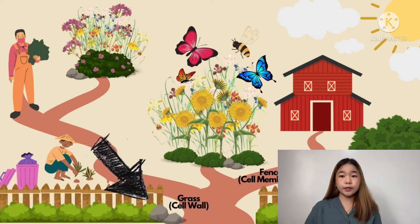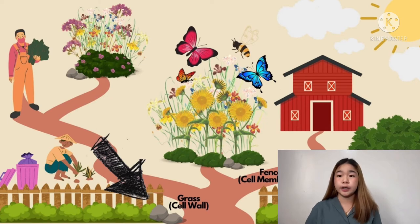Second, we have the grass in front of the fence. The grass is an additional boundary or protection to the farm. Just like the grass, the cell wall is also an additional protection to the cell.